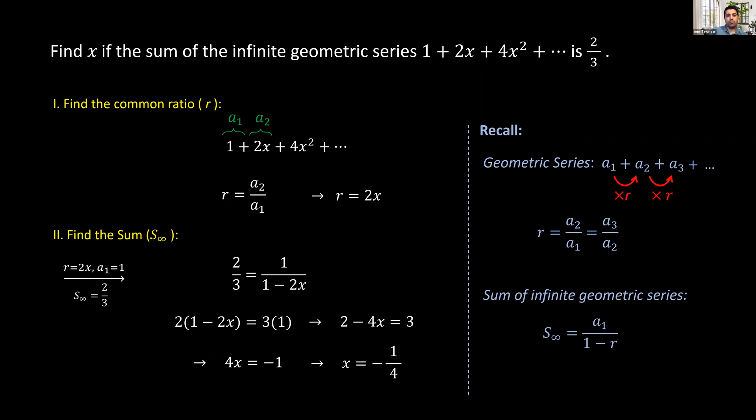Finally, we divide both sides by 4 to isolate x, and we get x equals negative 1 over 4. Thanks for watching.